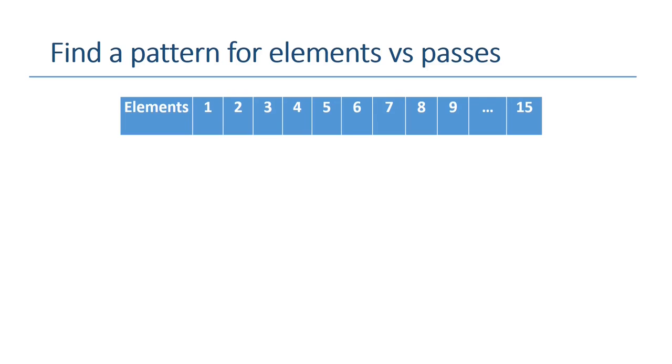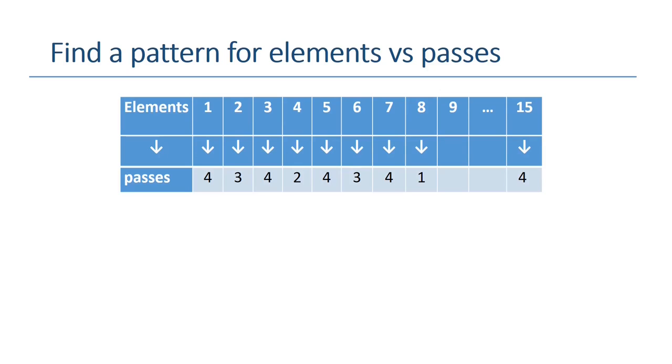For example, if we have 15 elements in an array, then we need to determine how many passes are required for each of these elements. As you know, the binary search looks for the middle of the array, which is 8 in this case. To reach 8, it requires only 1 pass. In its second iteration, it will reach to 4. So that means 2 passes are required to reach 4. Then, 3 passes are required to reach either 2 or 6. And lastly, 4 passes are required to reach the rest of these elements.